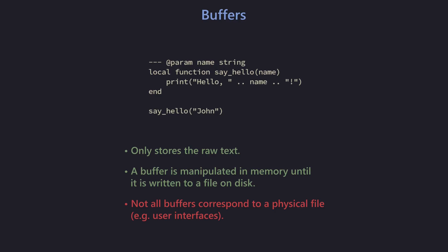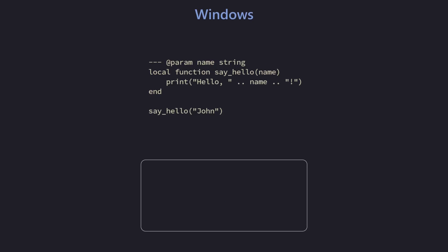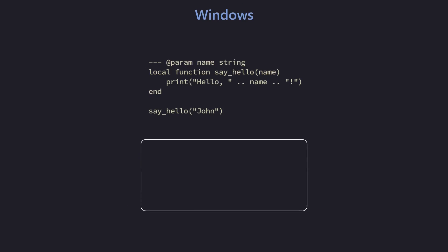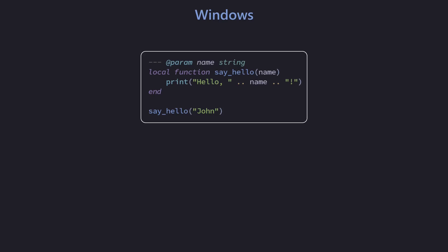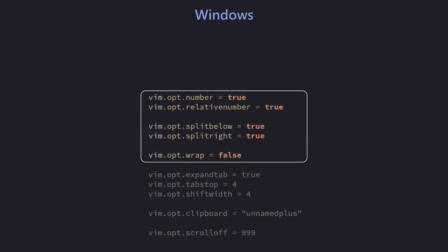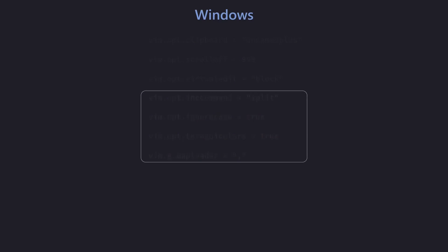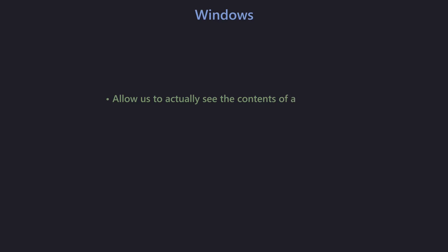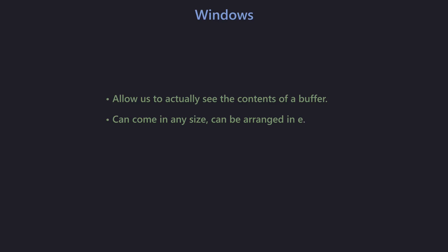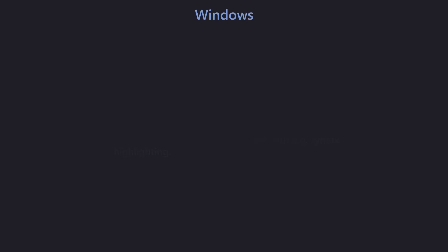If we want to view the buffer and physically interact with it, we need the help of the window. The job of the window is to give us a view onto a portion of the buffer — sometimes the whole thing if your file is very short, but most of the time just a portion. The reason Neovim makes this distinction is because windows can come in many different shapes and sizes: the regular window, splits, floating windows, all at any position on the screen.